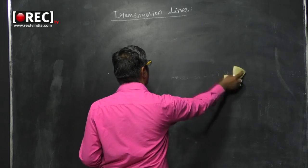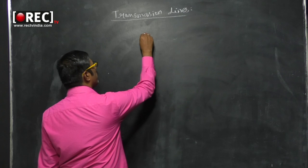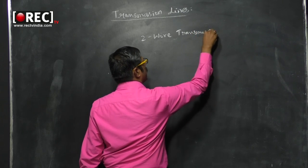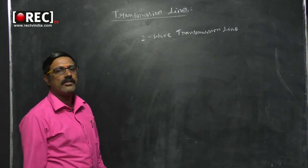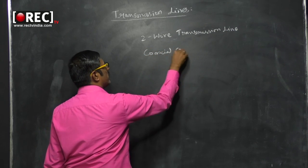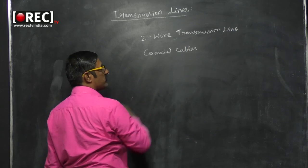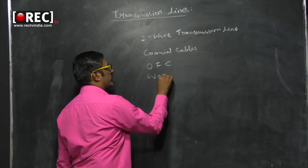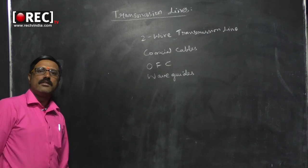Now let me explain the different types of transmission lines. In older days we used to have a two-wire transmission line. The first type is the two-wire or twin cable transmission line. After that came the coaxial cables. Next are optical fiber cables, and finally we have waveguides.